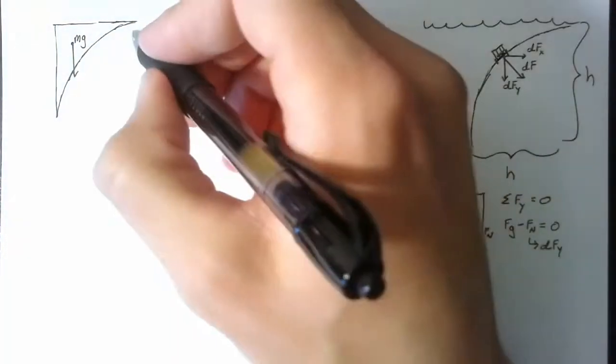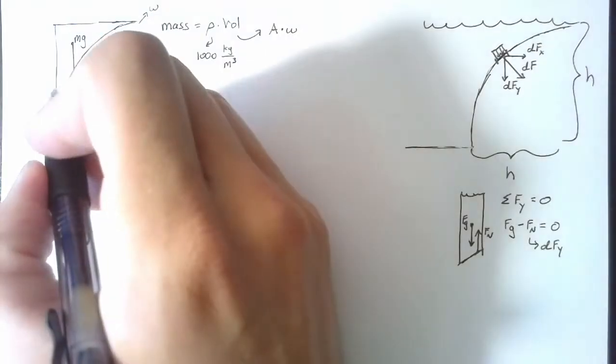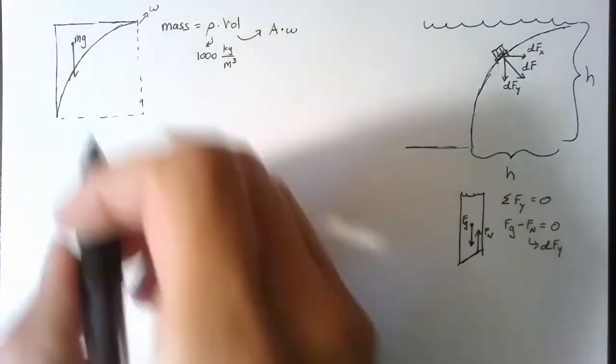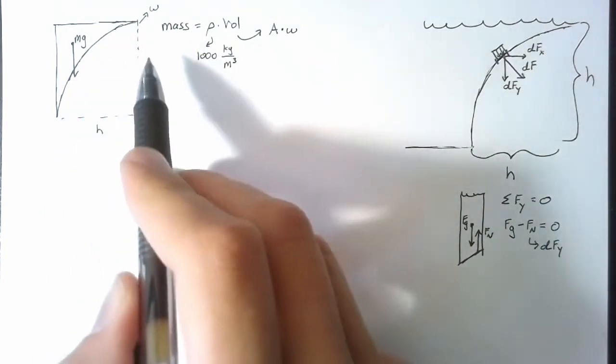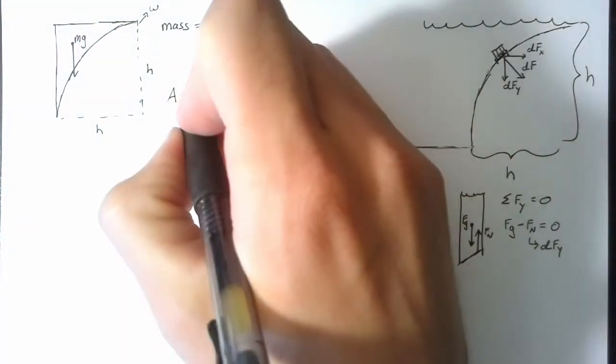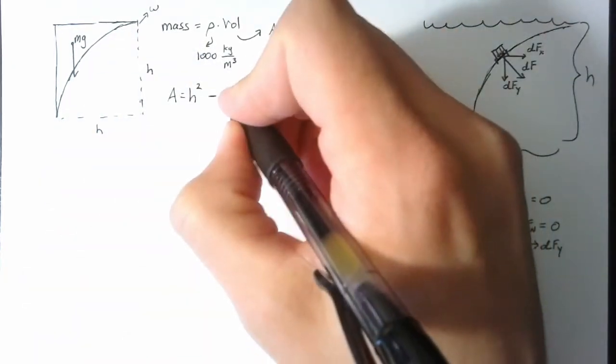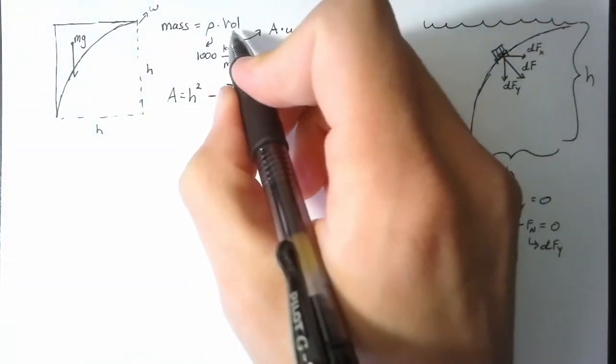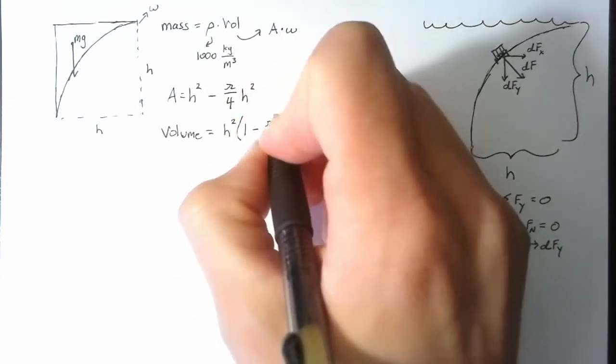So we know the density of water, 1,000 kilograms per meter cubed. Our volume is going to be this area multiplied by some width. So we have to say that this width goes into the paper some amount, and I'm just going to call that w. So what is the area of this region? Well, if we can find an area of a square with sides h and a quarter of a circle with a radius h, we subtract those out and we end up with the piece that's left. So our area is simply h squared, which is our area of the square, minus this portion of the circle, which is pi over 4 times h squared. So our total volume is going to be h squared 1 minus pi over 4 times w.